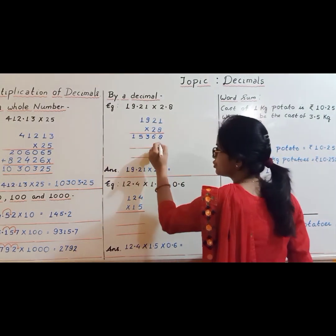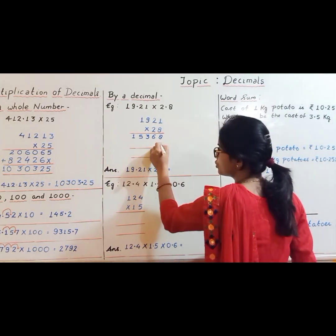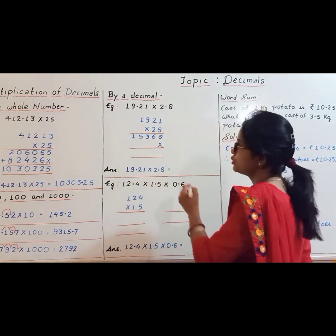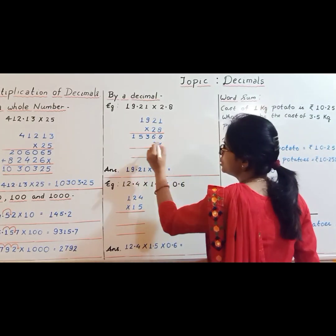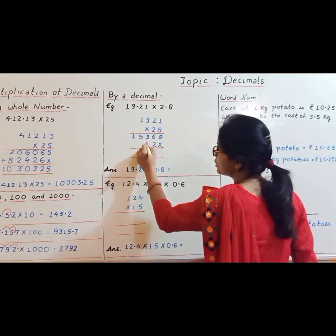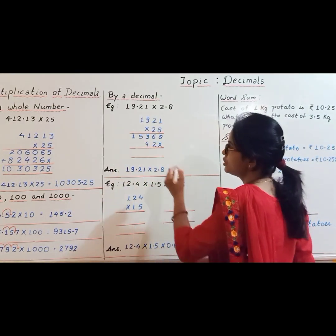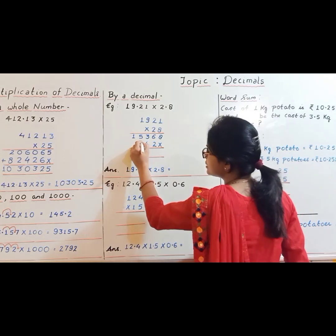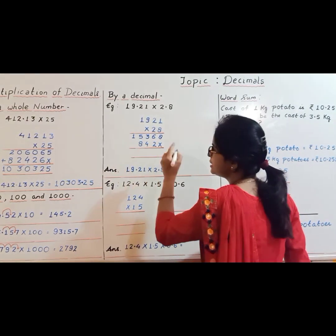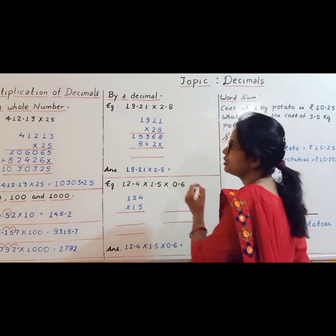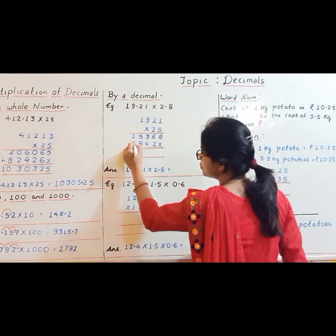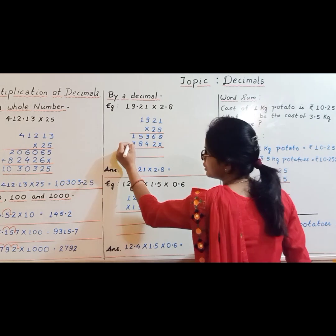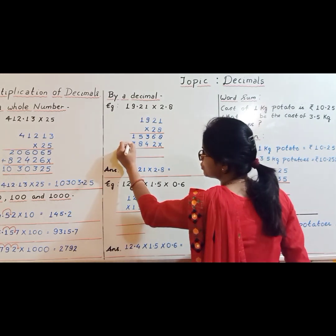Next row: put a cross here. 2 ones are 2, 2 twos are 4, 2 nines are 18 carry 1, 2 ones are 2 plus 1 is 3. Now we have to add these two rows.